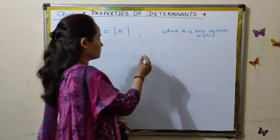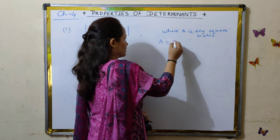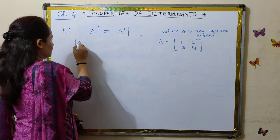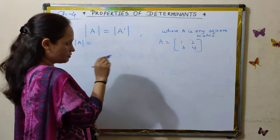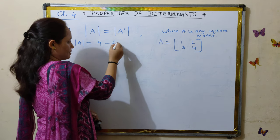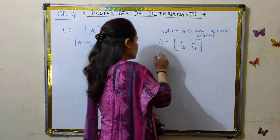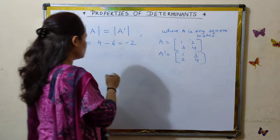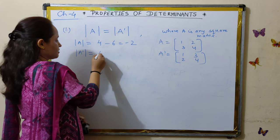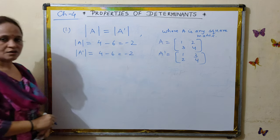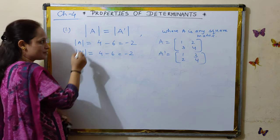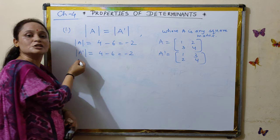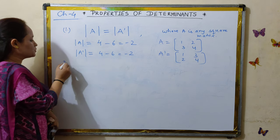Let's verify this property with an example. We take any square matrix A of order 2. We find its determinant and get 4 minus 6, which is minus 2. Now we take the transpose of the matrix by changing rows into columns. We get the determinant of the transpose as 4 minus 6, also minus 2. Both are equal, so the property is verified — the determinant remains unchanged after taking the transpose.